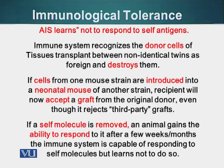The adaptive immune system learns not to respond to self-antigens — we will see the cellular basis of this. The immune system can recognize cells that are not self if they are transplanted. Anything transplanted between two individuals who are not identical twins will be rejected by the host, because our immune system is geared towards destroying anything that is foreign, even if it is meant to help us.